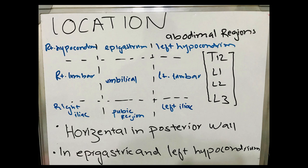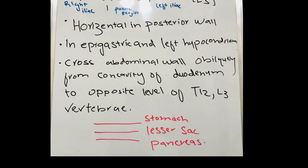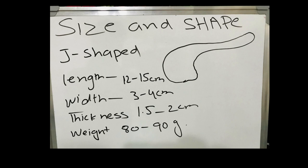The pancreas crosses the abdominal wall obliquely from the C-shaped concavity of the duodenum to the level of T12-L3 vertebrae. In sequence, we have the stomach, then beneath it the lesser sac, and below that the pancreas. The pancreas is J-shaped, with a length of 12 to 15 centimeters, a width of 3 to 4 centimeters, and a thickness of 1.5 to 2 centimeters.